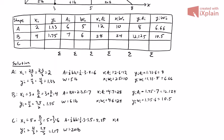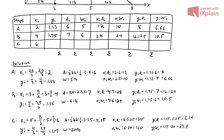For shape C: x times A is six times 5.25, which is 31.5. x times W is six times 20, which is 120. y times A is 1.17 times 5.25, which gives us 6.14. y times W is 1.17 times 20, which gives us 23.4. Transcribing into the table: x=6, y=1.17, area=5.25, weight=20, x×A=31.5, x×W=120, y×A=6.14, y×W=23.4.